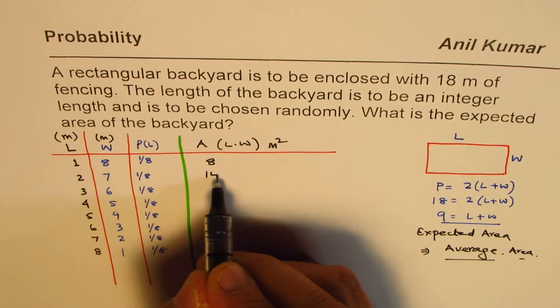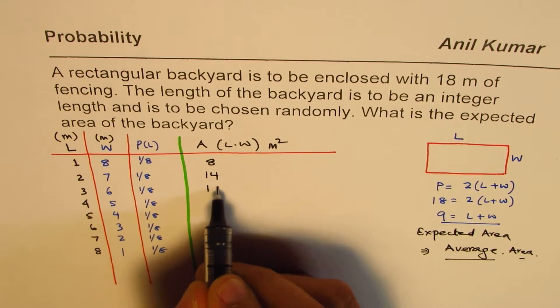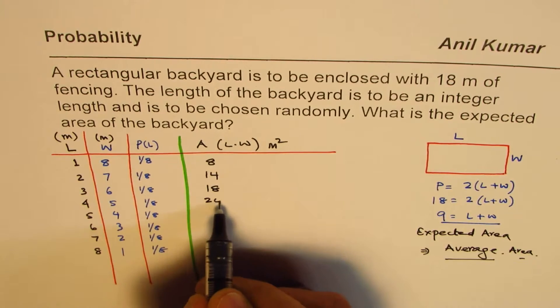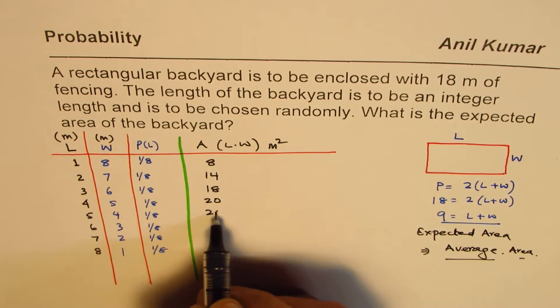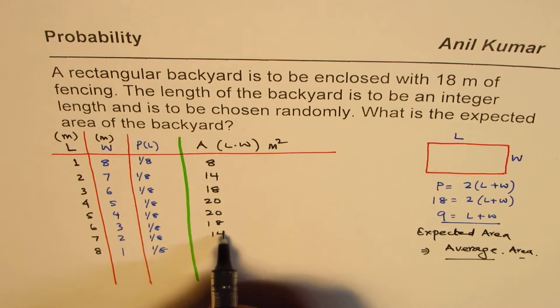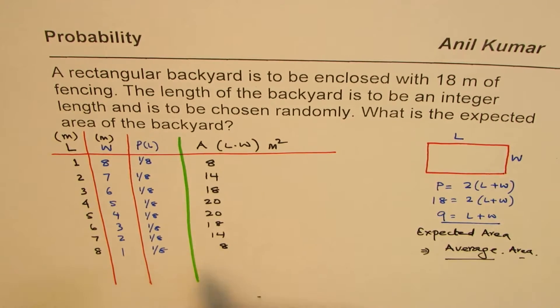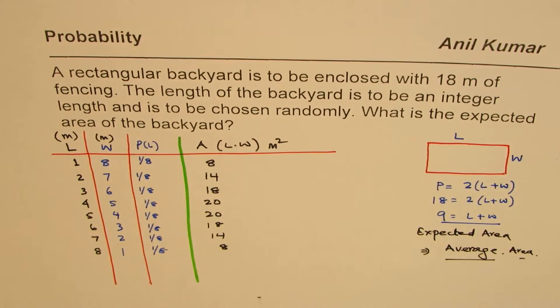So 2 times 7 is 14. 3 times 6 is 18. 4 times 5 is 20. 5 times 4, so they repeat. 6 times 3, 18. 7 times 2, 14. 8 times 1, 8. So those are the expected areas.